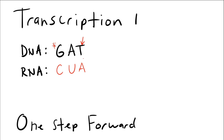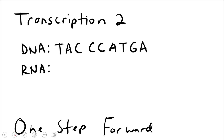I teach my students this as being one step forward — we've gone from DNA to RNA. It can get more complex, so in this second transcription example we're going to take more DNA bases and transcribe them into RNA using complementary base pairing and substituting U's instead of T's. T is going to pair with A.